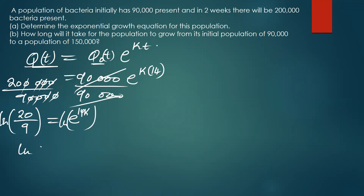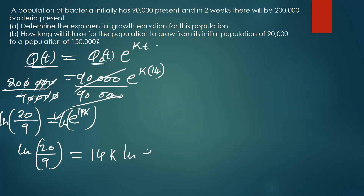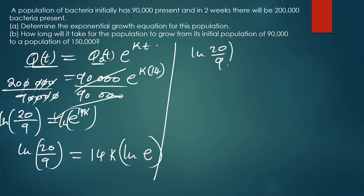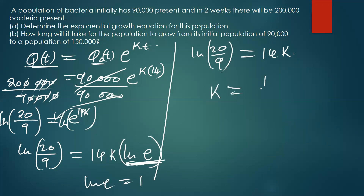When you introduce ln on both sides, you get ln(20/9) equal to 14k times ln(e). Since ln(e) is simply 1, that term drops to 1, so you have ln(20/9) equal to 14k. From there we make k the subject, giving k = (1/14) × ln(20/9). This is the solution if you are not allowed to use a calculator.